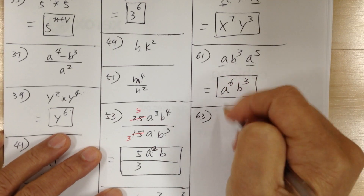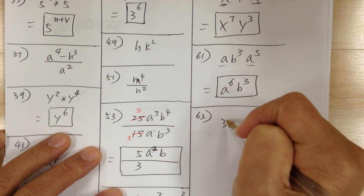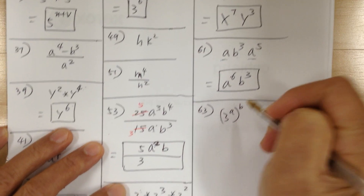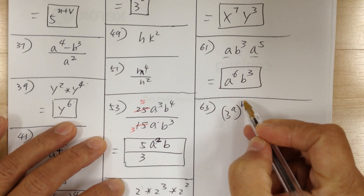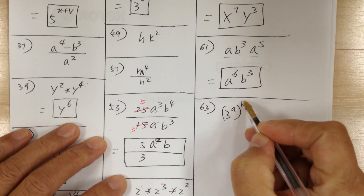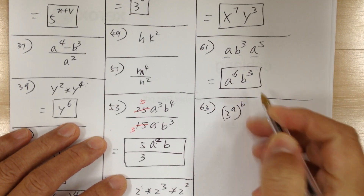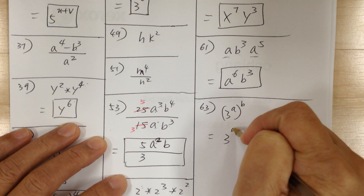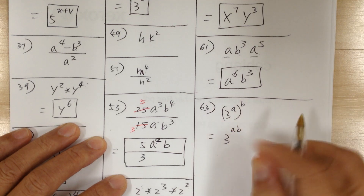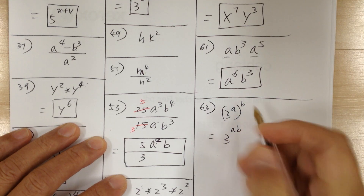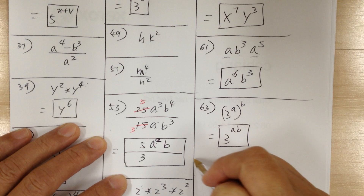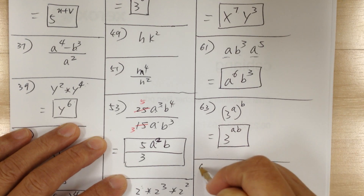Number 63, you got 3 to the a to the b. When you apply the power rule, you multiply. So it becomes 3 to the ab. Again, when you multiply the exponents, it becomes a times b — that's the power rule.